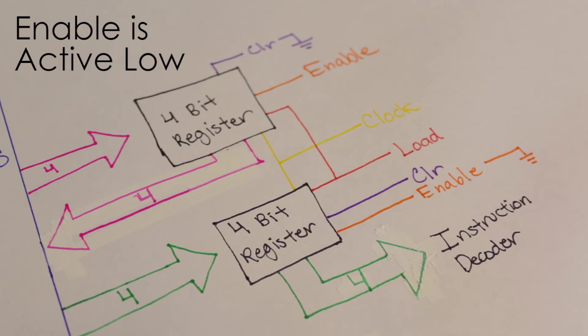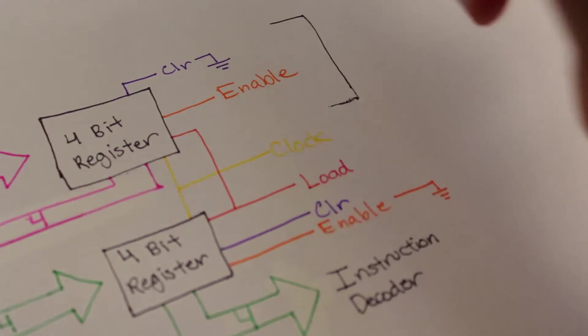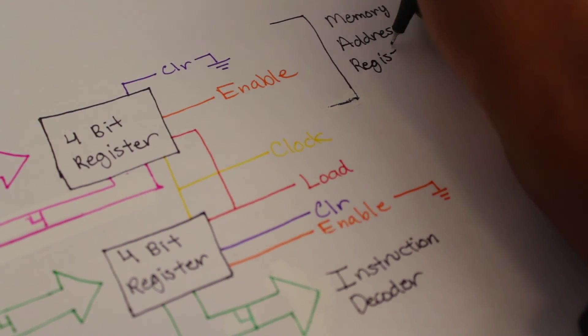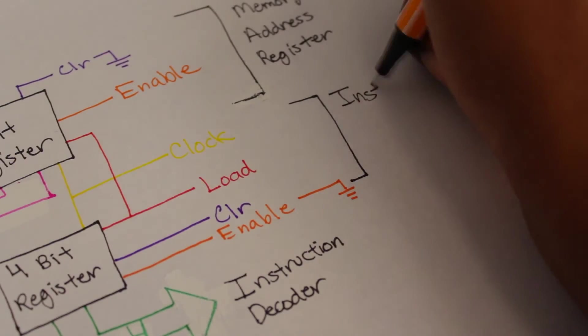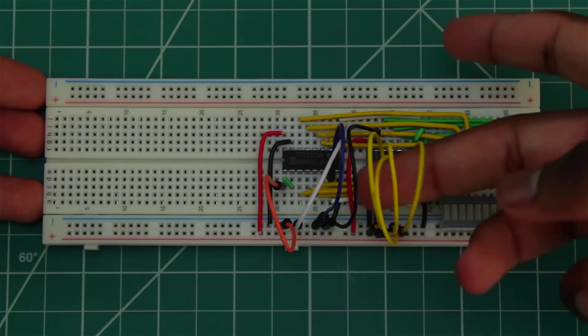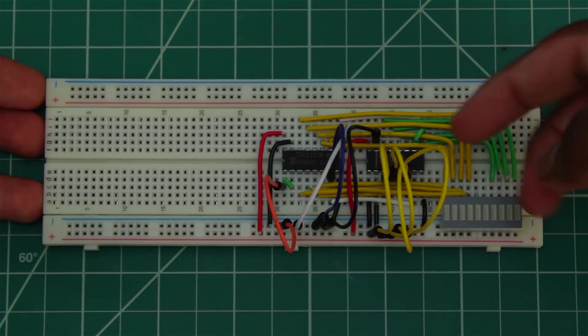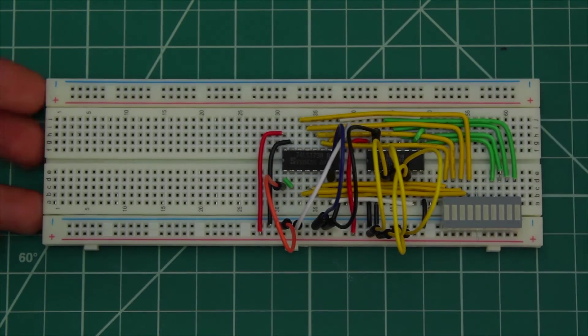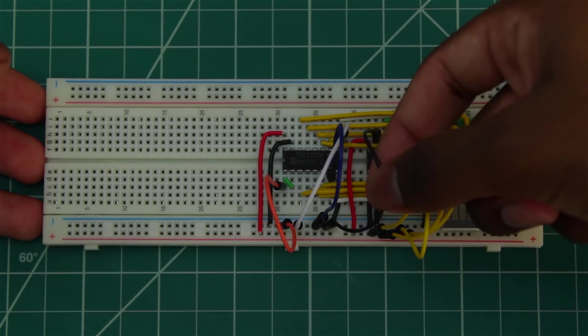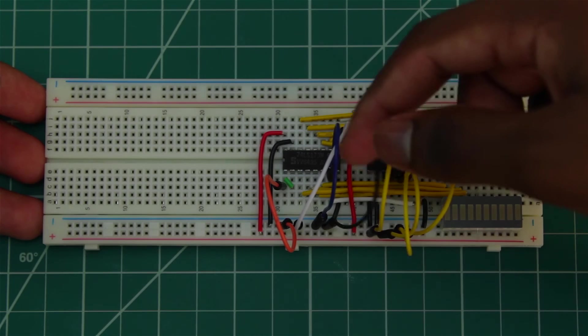To recap, this top register is for the memory address while the bottom is for the instruction. Now here's our actual instruction register. These yellow lines are the outputs that'll go to the instruction decoder we'll build later. The black line is the clear signal for the instruction register.